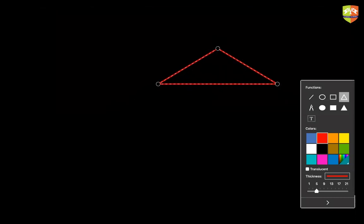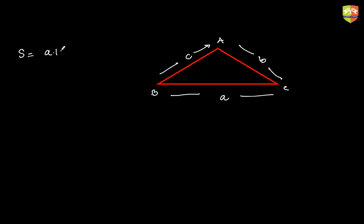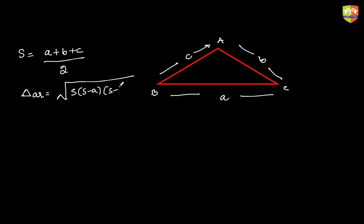Let me write the first triangle. We have a side of length a, a side of length b, and a side of length c. The semi-perimeter S would be (a plus b plus c) divided by 2. And the area of triangle is under root S(S minus a)(S minus b)(S minus c). This formula is called Heron's formula.